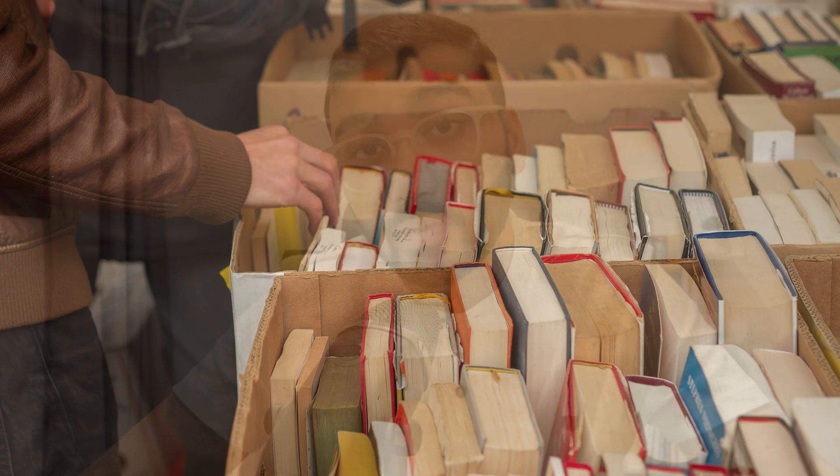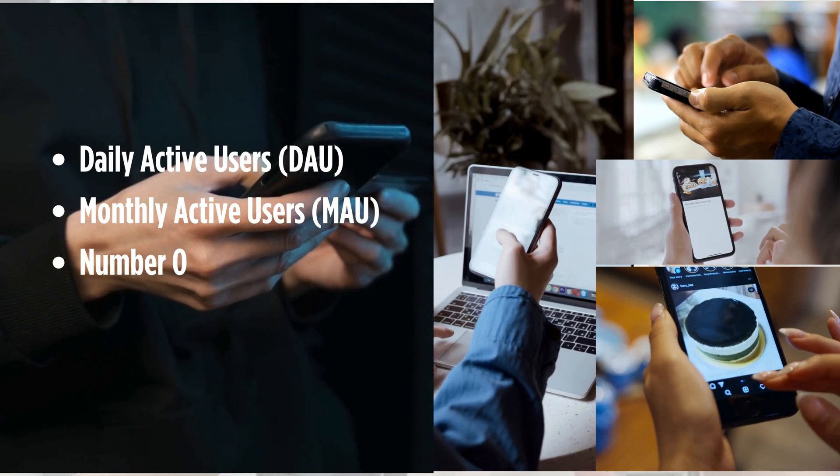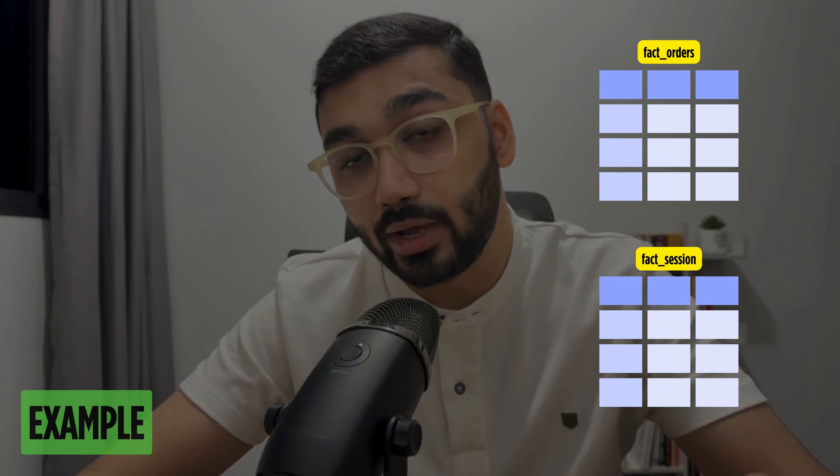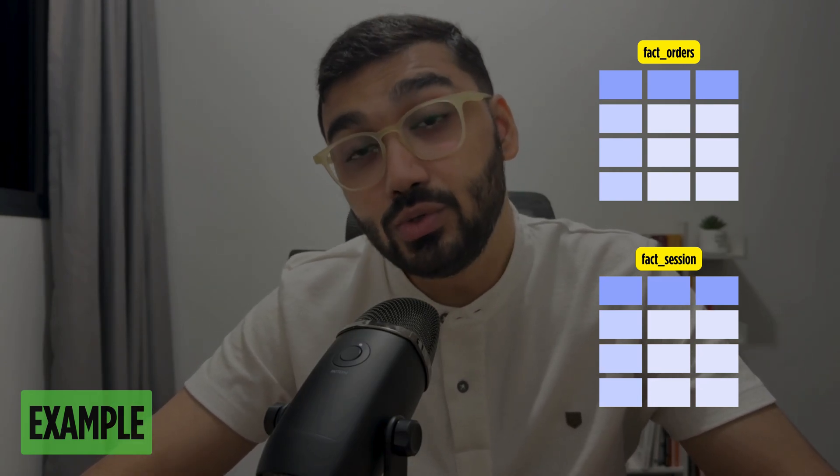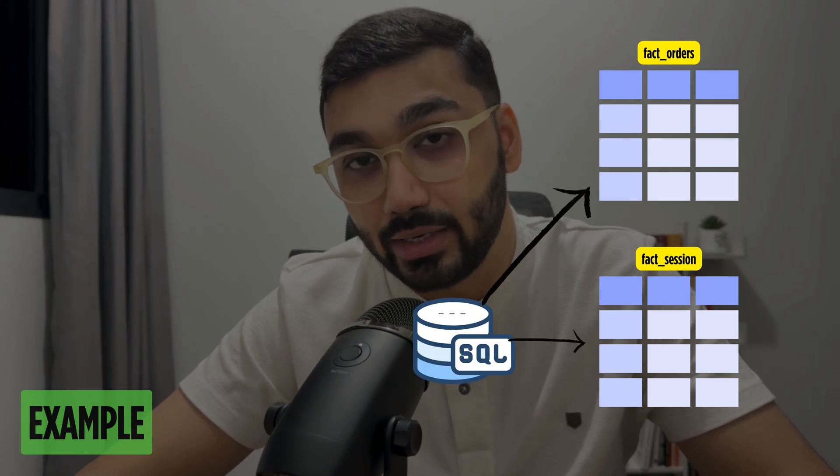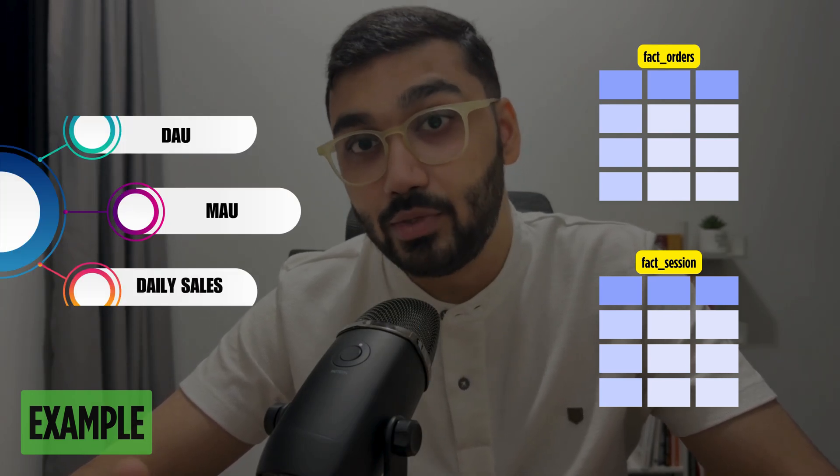Let's simplify this with an example. Say you're opening a secondhand bookstore app — what are some metrics that help you understand if your bookstore is doing well? Some could be daily sales, daily active users, monthly active users, the number of visitors, and duration they spend on the app. To calculate those metrics, you'd structure your data in tables like a fact_orders table to store orders and a fact_sessions or fact_logins table to store login details. Using those two tables, you can write SQL queries to calculate metrics like DAU, MAU, and daily sales.